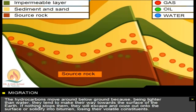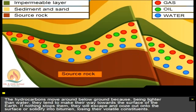The hydrocarbons move around below ground because, being lighter than water, they tend to make their way towards the surface of the Earth. If nothing stops them, they will escape and ooze out onto the surface or solidify into bitumen, losing their volatile constituents.